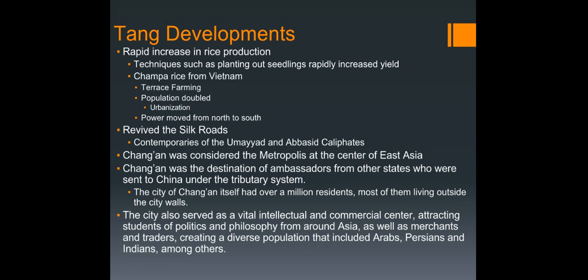Unfortunately with woodblock printing, only a few copies could be made before the ink was absorbed by the wood. Under the Tang, rice farming expanded with champa rice from Vietnam, which allowed the population to double and shifted power from north to south. The Silk Road was also revived, and the Tang were contemporaries of the Umayyad and Abbasid caliphates — the Abbasids also being referred to as a golden age.